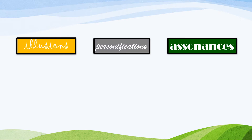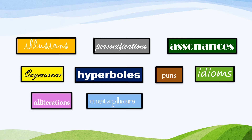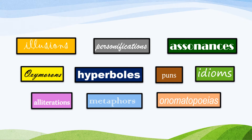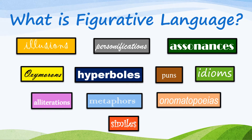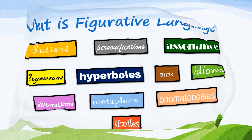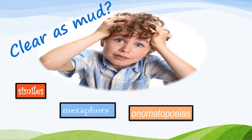There are oodles of figurative language. Some examples are illusions, personifications, assonances, oxymorons, hyperboles, puns, idioms, alliterations, metaphors, onomatopoeias, and similes. But what is figurative language? Figurative language are words that differ from their literal meaning. We use them all the time. Today we'll be focusing on similes, metaphors, onomatopoeias, and alliterations.